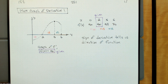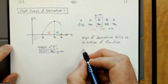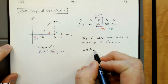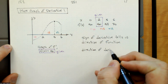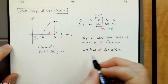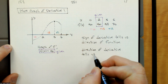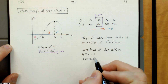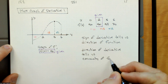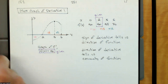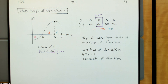Today we want to look one level below that, one derivative beyond this. We want to look at the direction of the derivative, which tells us about the concavity of the function.